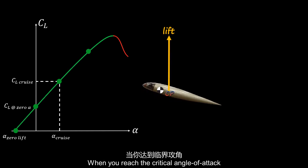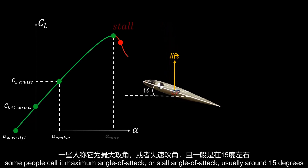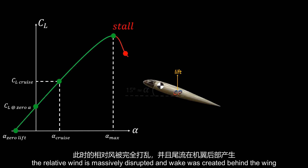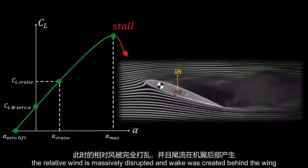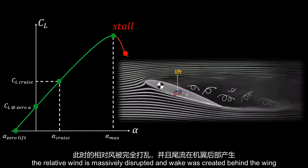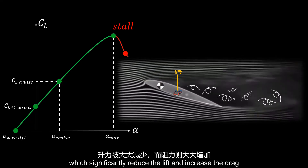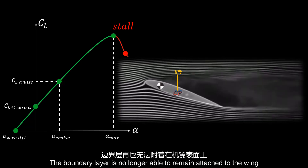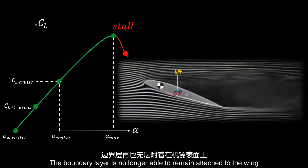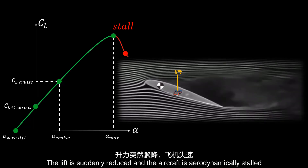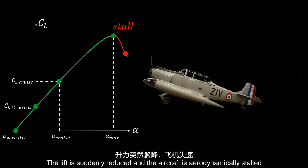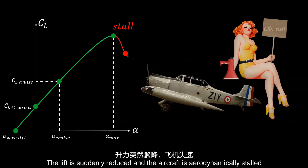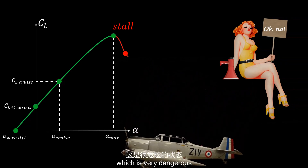When you reach the critical angle of attack — some people call it the maximum angle of attack or stall angle of attack — usually around 15 degrees, the relative wind is massively disrupted and a wake is created behind the wing, significantly reducing lift and increasing drag. The boundary layer is no longer able to remain attached to the wing, lift is suddenly reduced, and the aircraft is aerodynamically stalled, which is very dangerous.